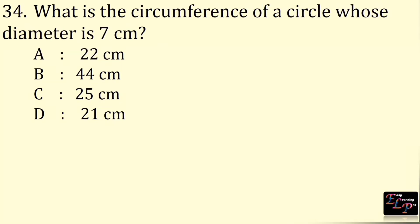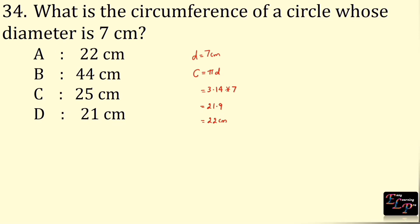What is the circumference of a circle whose diameter is 7 cm? Diameter is 7 cm. Circumference of a circle is πd = 3.14 × 7 = 21.98, which rounds to 22 cm. The answer is option A, 22 cm.